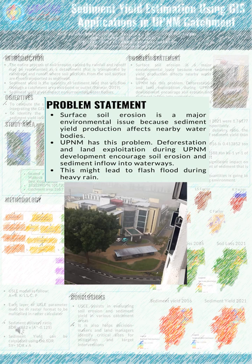This problem leads to increasing chances of floods, reduced capacity of reservoirs, development of algae blooms, and inadequate drainage — problems that UPNM is currently facing. Deforestation and land exploitation during UPNM development encourage soil erosion and sediment inflow into waterways. This might lead to flash floods during heavy rain, as you can see in the picture of flooding that happened in UPNM.